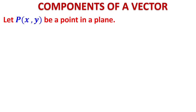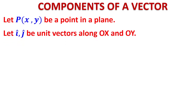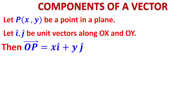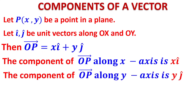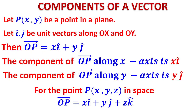Now we will express a point P in terms of its coordinates — this is called components. Let i and j be unit vectors along OX (x-axis) and OY (y-axis). Then vector OP = xi + yj, where xi is the component along the x-axis and yj is the component along the y-axis. In three dimensions, there is one more unit vector k along the z-axis, so the position vector becomes xi + yj + zk.